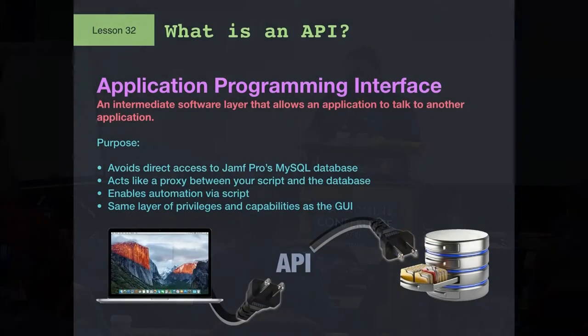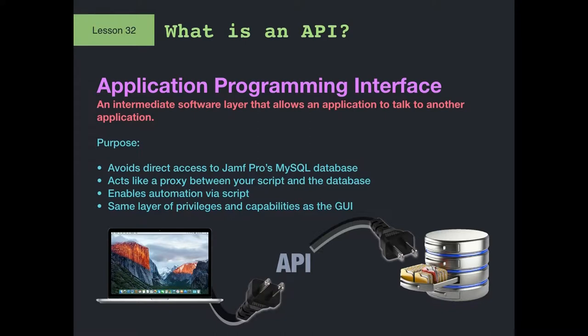I'll turn it over to Bill to give you a little introduction to what the API actually is. Finally, we get away from all those code snippets and we start talking about interacting with Jamf Pro right now. This is the API — Application Programming Interface. It's a fancy term for a layer that sits between you and the database. The web GUI and the API both exist at the same layer. One you can interact with through a browser, the other through the command line.